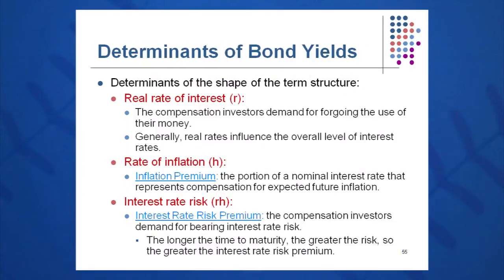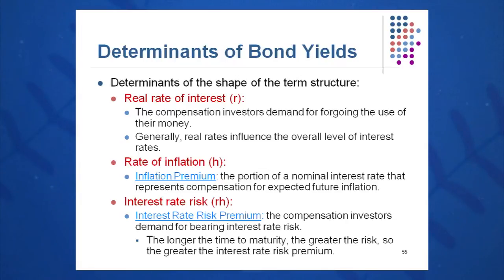There are three components: the real rate of interest, little r — the compensation we demand for the use of our money. Also an inflationary component — the portion of the total interest rate that represents compensation for expected future inflation. And finally that little RH component — we want some interest rate risk compensation. That's what makes up the term structure.